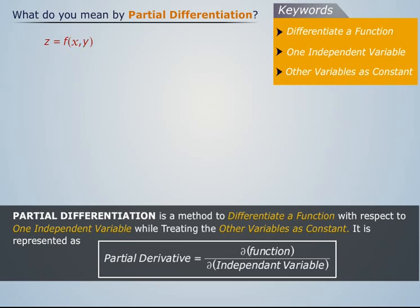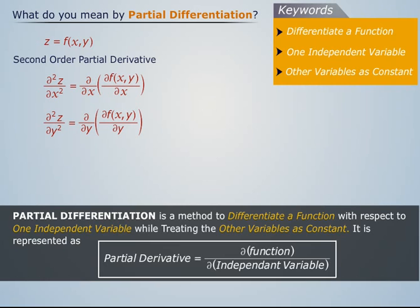To find its second-order partial derivative with respect to x or y, we have to differentiate the function f(x,y) twice with respect to one variable while treating the other variables as constant.